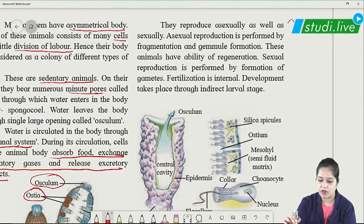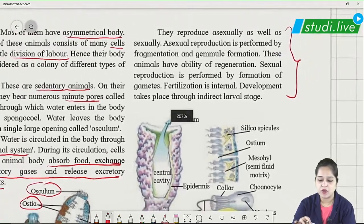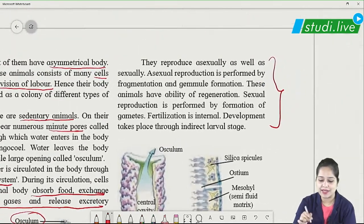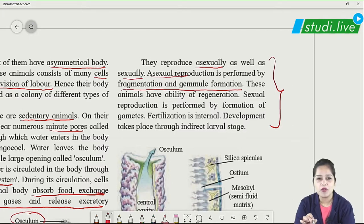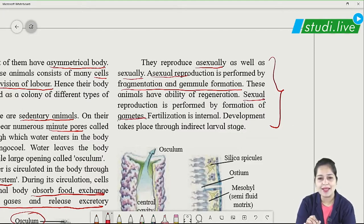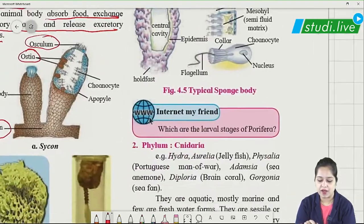Their body cavity is called the spongocoel, made up of flagellated cells called choanocytes or collar cells. They are supported by calcareous or siliceous spicules made up of spongin fibers. They reproduce asexually by fragmentation and gemmule formation (internal buds), and sexually by gametes. Fertilization is internal and development is through an indirect larval stage.